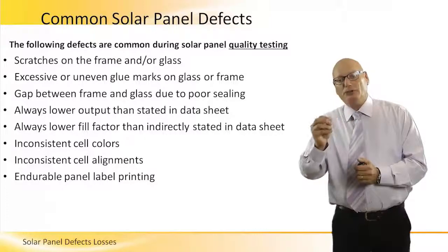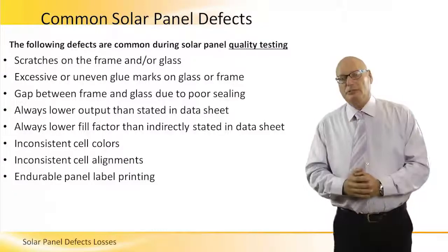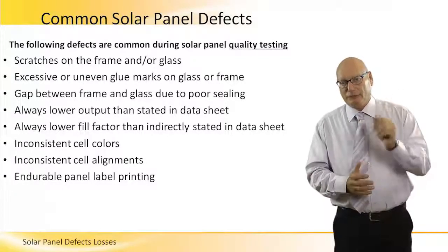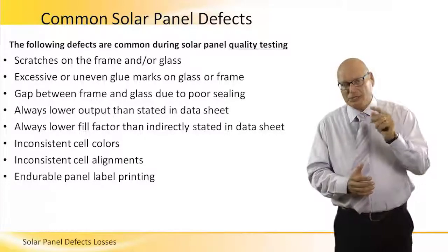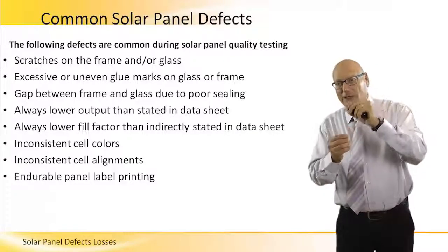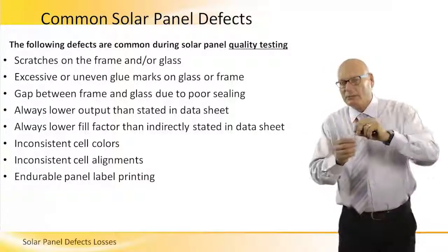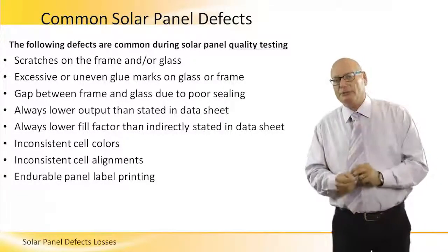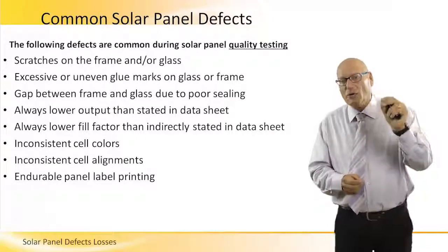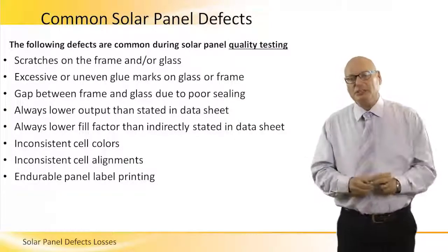Output is always lower than stated in the data sheet. We have to look at practical aspects and calculate using the NOCT to reduce the level of power output. For example, a 200-watt panel — the NOCT might bring it down to 155 watts, as we saw before. We always have to look at how much the output will go low compared to what is stated in the data sheet.